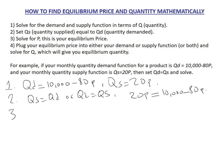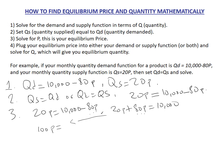Now step three. So we have 20P equals 10,000 minus 80P. Taking minus 80P to the other side gives us 20P plus 80P equals 10,000. This gives us 100P equals 10,000, and therefore P equals 10,000 over 100 — cancel the two zeros — and P equals 100. That is our equilibrium price.